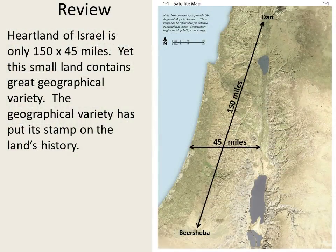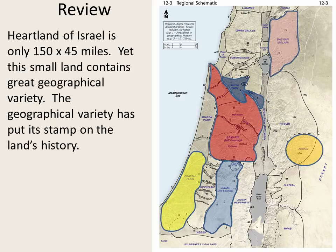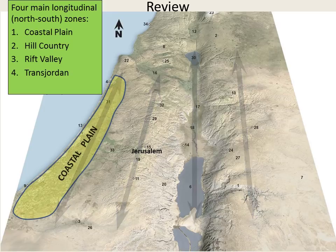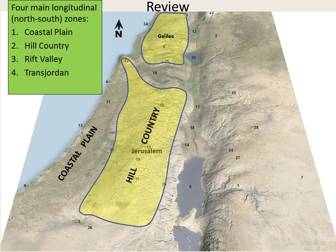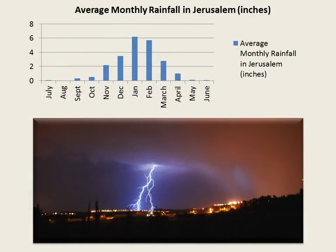To review: the heartland of the land of Israel is only 150 by 45 miles, yet this small land contains great geographical variety, and that geographical variety has put its stamp on the land's history. We learned about the four major longitudinal, or north-south running zones of the land of the Bible: the coastal plain, the hill country, the rift valley, and the Transjordan Plateau. Finally, we noted that Jerusalem receives as much rainfall as London — some 24 inches a year — however, rain falls only in the winter months, so the land experiences long, dry summers. Without the winter rains, life quickly ceases, and the writers of Scripture make it clear that man is dependent upon God to send life-giving rain.